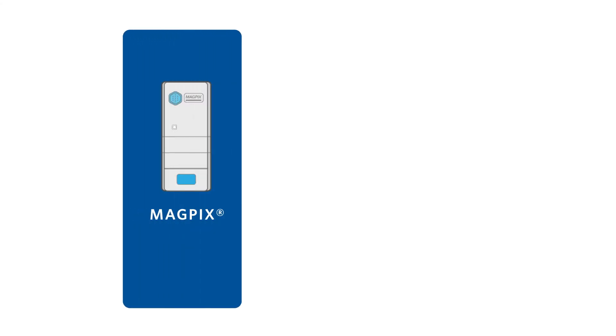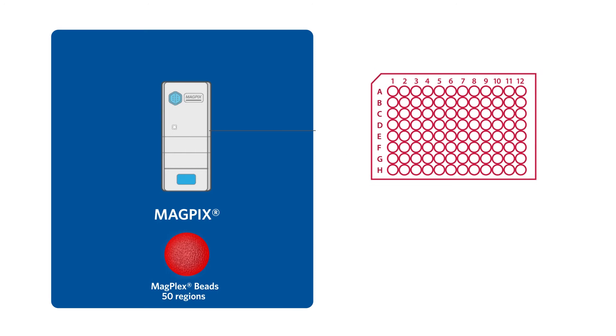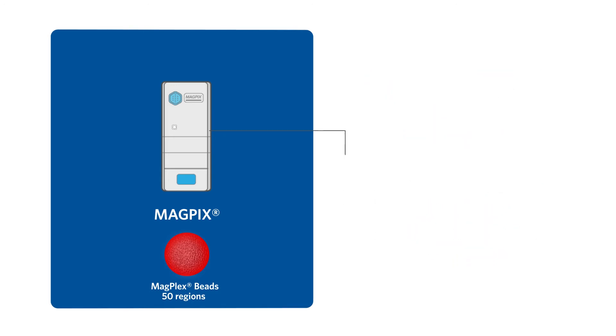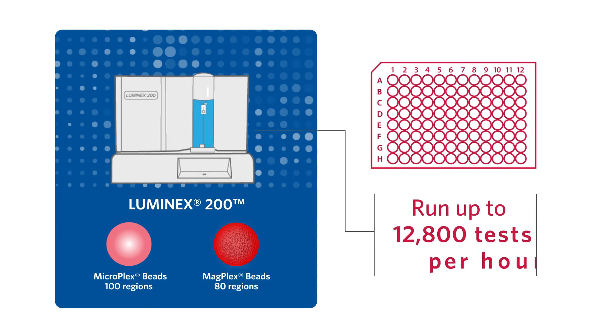Magpix can read up to 50 bead regions and exclusively reads magnetic beads. It can analyze a full 96-well plate in one hour. The Luminex 200 can read up to 100 bead regions and analyzes a full 96-well plate in 45 minutes.